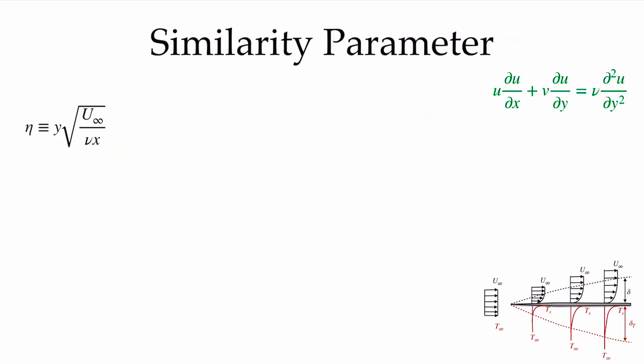The big trick in converting a partial differential equation into an ordinary differential equation is finding a similarity parameter. A similarity parameter scales the different velocity profiles at different x locations so they all collapse to a single curve. Once all profiles collapse to a single curve, we have the solution for every location as soon as we know that one curve — this is what casts the problem into a one-dimensional similarity parameter. Blasius found that eta, a scaling of the y-coordinate of the form sqrt(u_infinity / (nu * x)), is such a similarity parameter.